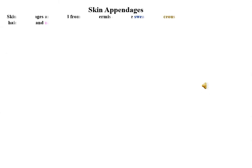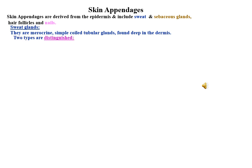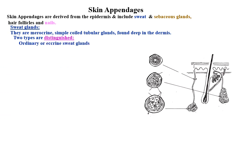Skin appendages are derived from the epidermis and include sweat and sebaceous glands, hair follicles, and nails. Sweat glands are merocrine, simple coiled tubular glands found deep in the dermis. Two types of sweat glands are distinguished: ordinary or eccrine sweat glands, and apocrine sweat glands.